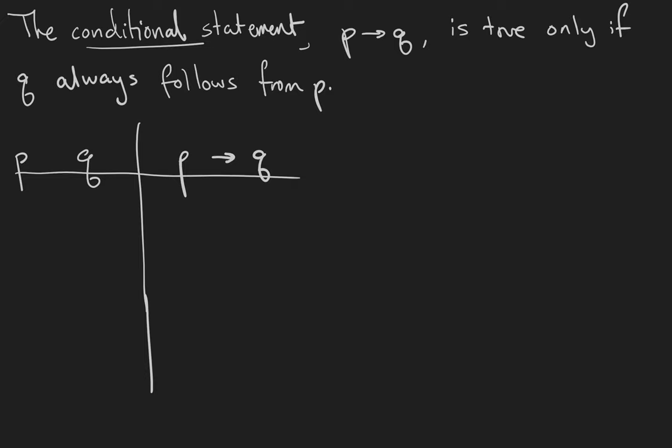In this video we're going to learn about the last two connectives which are both of conditional type. They are some of the most important connectives we're going to look at because mathematics is all kinds of sentences saying if this statement is true then this one is also true, but they are also more difficult to understand than simple conjunction and disjunction. So let's get started.